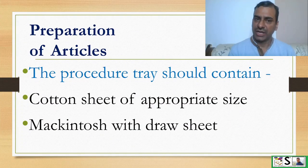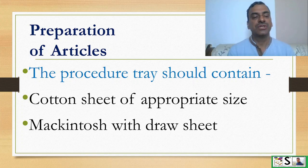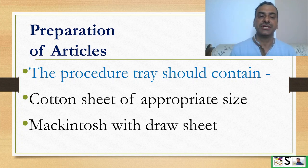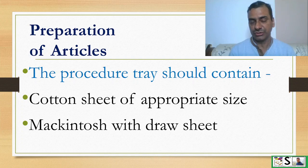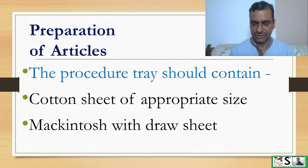Preparation of articles — not many articles are needed. The procedure tray should contain a cotton sheet of appropriate size and a Macintosh with draw sheet.